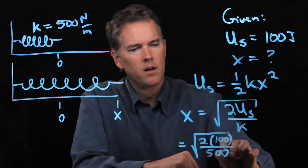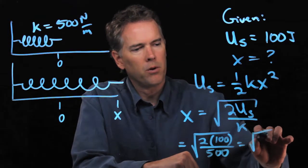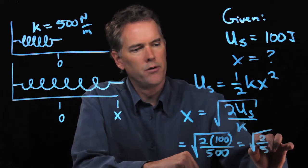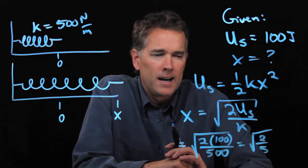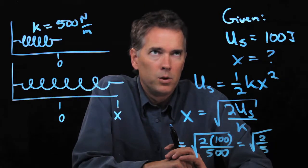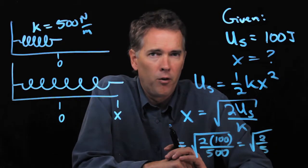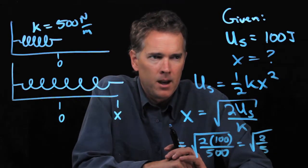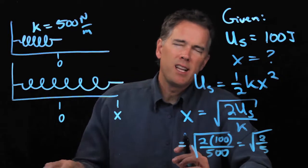This becomes the square root of 2 over 5. Square root of 2 over 5 is what? Well, 2 over 5 is 0.4 and that's got to be pretty close to...